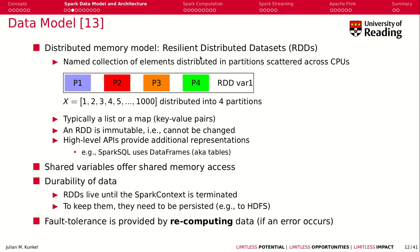Let's talk about the durability of data. As the name 'Resilient' suggests, there must be some kind of durability. RDDs are stored in memory and they live until you terminate the Spark context in your application. If you terminate the Spark application, all the memory is freed. However, there is a way to persist the data. Resilience is provided by recording the actual computation history and recomputing the data if needed — for example, if the node hosting partition 4 goes down, partition 4 can be restored by going back to the source and reapplying the computation.